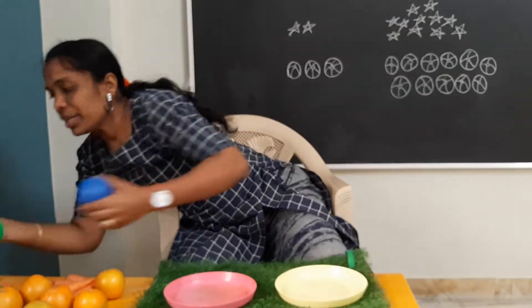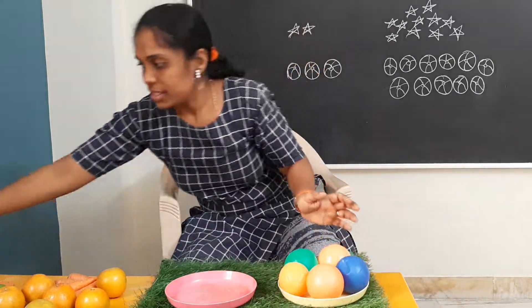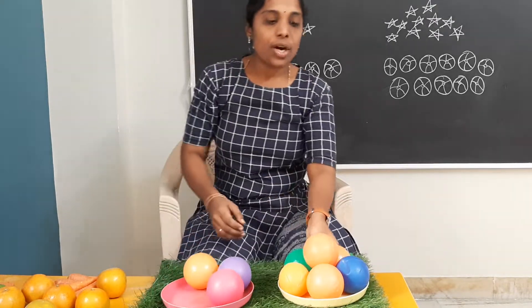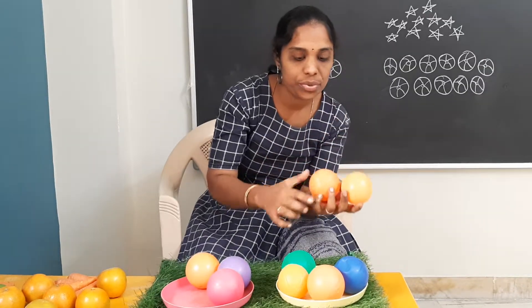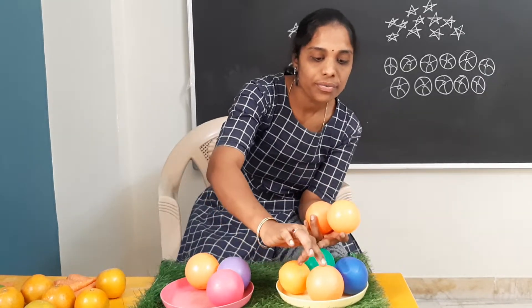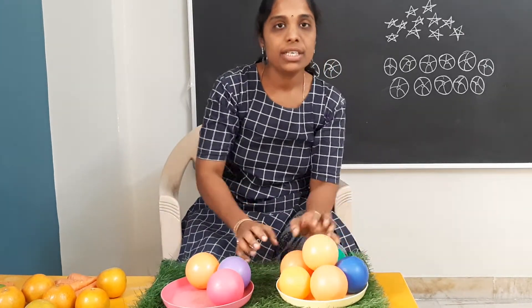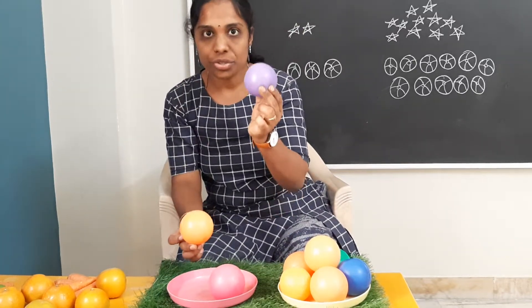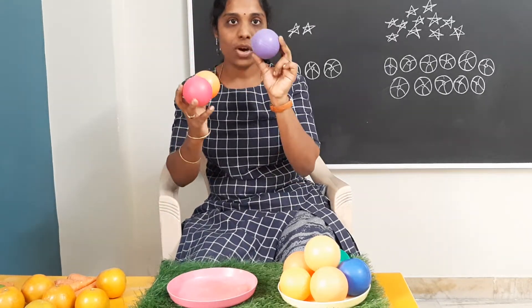Let us see what I am having — I am having flowers with me. Start counting along with me: one, two, three, four, five, six. This plate is having six flowers. And this plate is having one, two, three. How many are there in the second plate? One, two, and three.